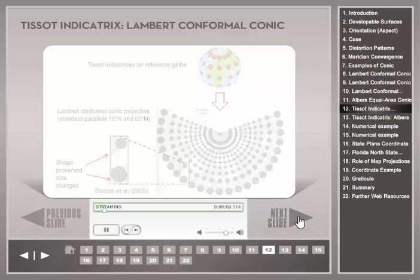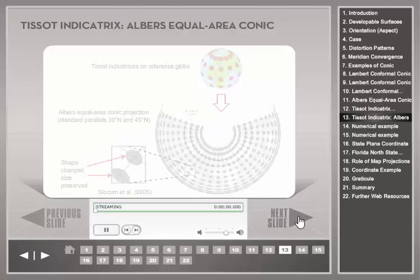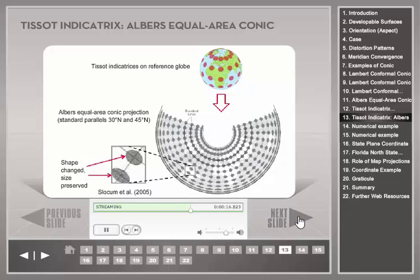The Tissot Indicatrices for the Lambert Conformal Conic projection are all circles, indicating no angular distortions and the preservation of shapes in small areas. The indicatrices change in size when moving away from the standard parallels, which means that the relative size of areas is not preserved with this projection. For the Albers Equal Area Conic projection, the Tissot Indicatrices are circles along the standard lines. For all other locations, indicatrices are elliptical in shape, meaning that shapes are not preserved. However, indicatrices retain the same area as on the standard lines.